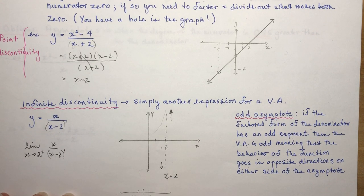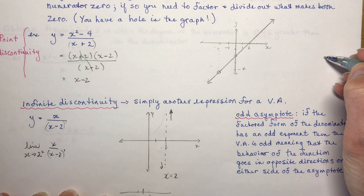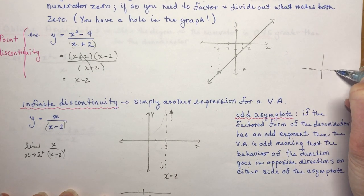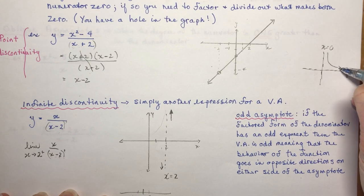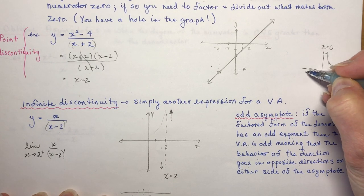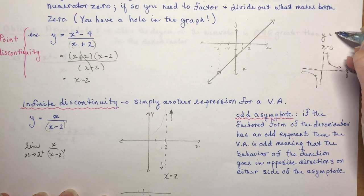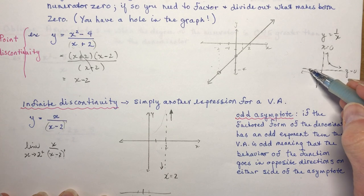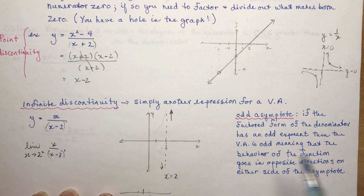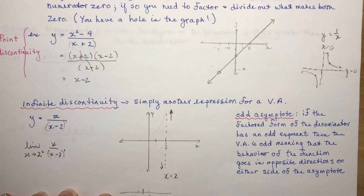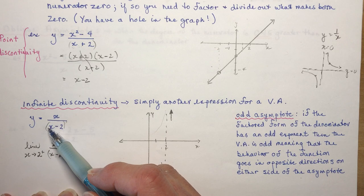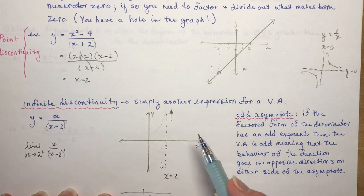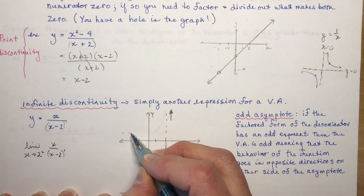The horizontal asymptote for x/(x−2): recall that 1/x had a horizontal asymptote of y = 0 and vertical asymptote x = 0. For x/(x−2), the numerator and denominator have the same degree, so the horizontal asymptote is the ratio of their leading coefficients — 1 over 1 — giving y = 1.